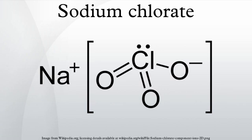The chloralkali process is an industrial process for the electrolytic production of sodium chlorate. It can also be synthesized by passing chlorine gas through a solution of sodium hydroxide. It is then purified by crystallization.